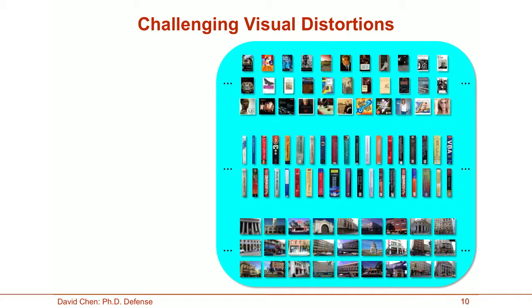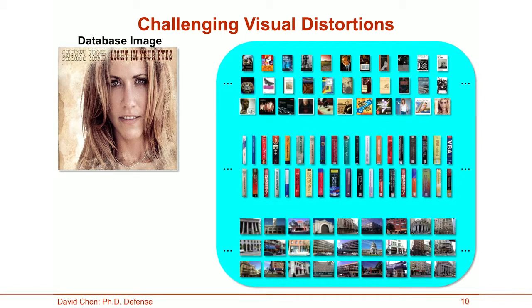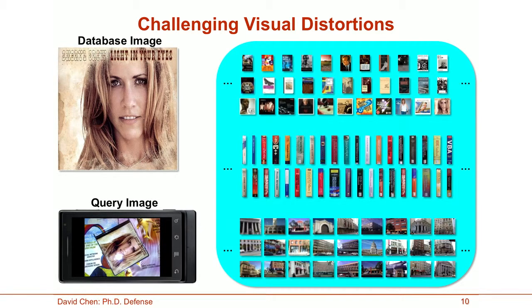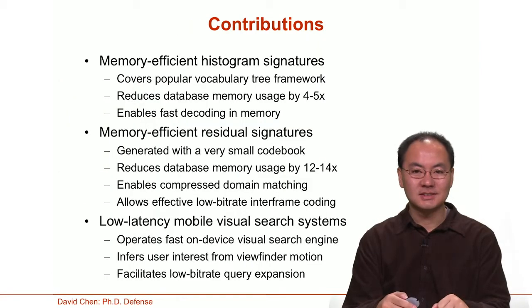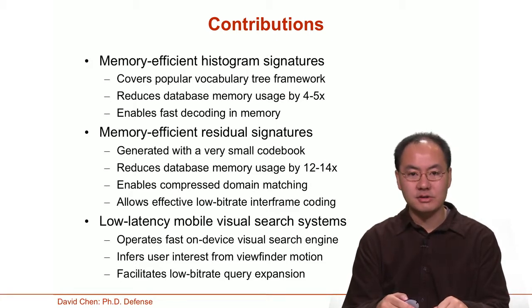There's also a third challenge for typical mobile visual search queries. Whenever we match a database image against an image taken by the mobile device showing the same object, there are large visual distortions separating these two images, including large geometric and photometric variations and surrounding clutter. So a third requirement is that we need to develop an image representation that is resilient against significant visual distortions. My contributions in this thesis directly fulfill all three requirements simultaneously and can create a memory-efficient, scalable, and robust database representation.